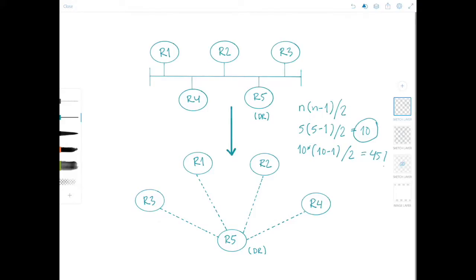So to prevent this problem, a backup designated router is selected in addition to the designated router. So all routers form adjacencies not only with the DR, but also with the BDR. So the DR and the BDR also become adjacent with each other. And if the DR fails, the BDR becomes the new DR.